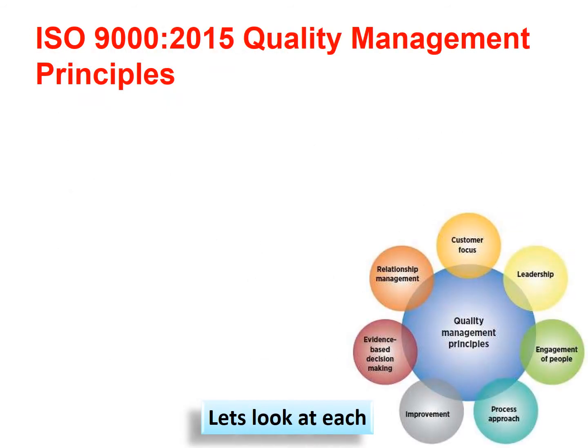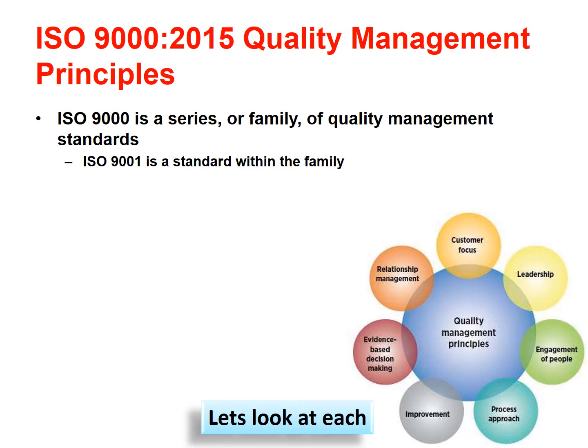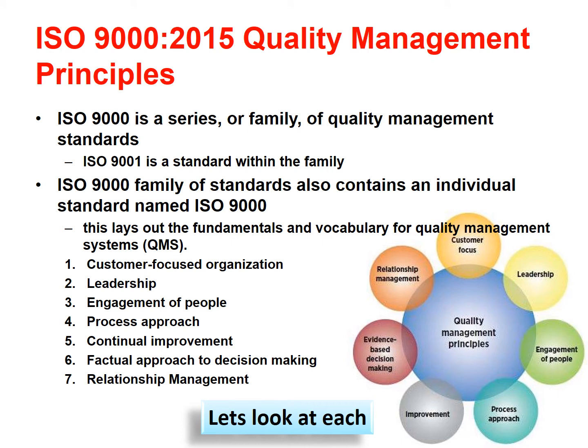Let's look at the ISO 9000 2015 Quality Management Principles. ISO 9000 is a series or family of quality management standards, and it contains an individual standard also named ISO 9000 that lays out the fundamentals and vocabulary for quality management systems. There are seven key principles: we must have a customer-focused organisation, look at leadership, engage people, have a process approach, look for continual improvement, take a factual approach to decision making, and develop relationship management.